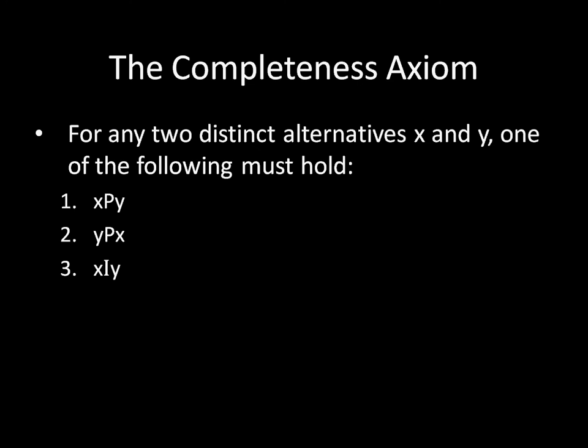Think back to just five alternatives: A, B, C, D, and E. These are the five options that can be implemented. How we define a complete preference relation is as follows. You have a complete preference relation if, for any two distinct alternatives X and Y, one of the following must hold: either you prefer X to Y, or you prefer Y to X, or you're indifferent between X and Y.